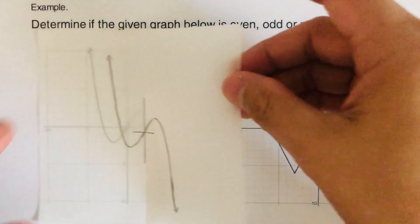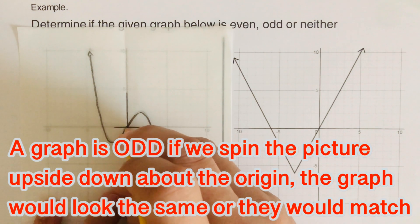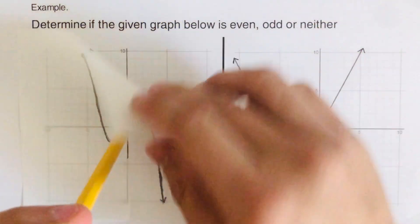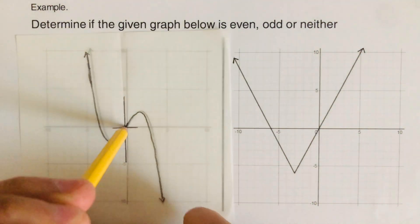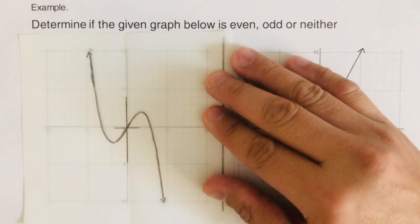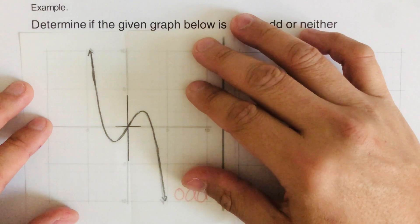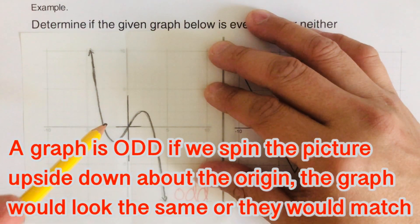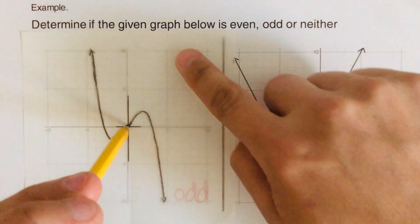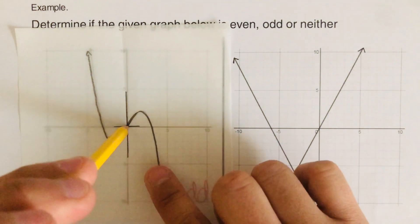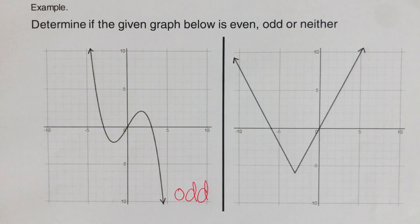Now let's test if it's odd. We spin the picture upside down about the point of origin and see if the graph on the patty paper and the original graph match up. We spin it upside down — and they are a match. So this graph is odd. To repeat: originally that's the graph; to test if it's odd, spin it upside down — the patty paper graph and the original graph match, so this is odd.